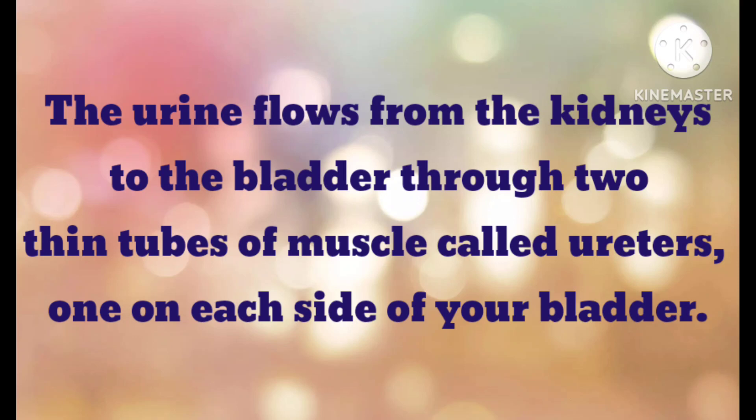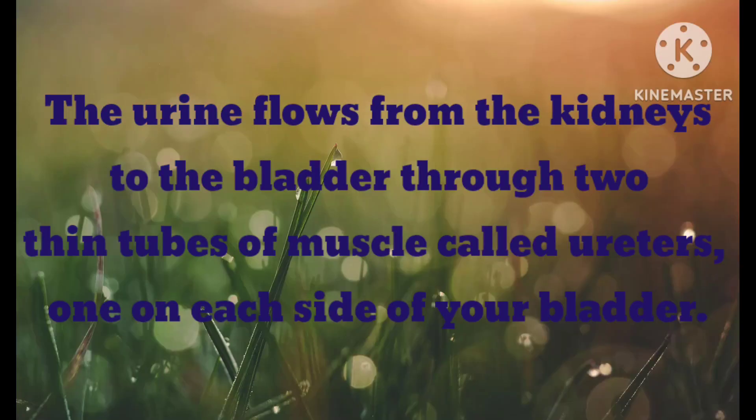The urine flows from the kidneys to the bladder through two thin tubes of muscle called ureters.